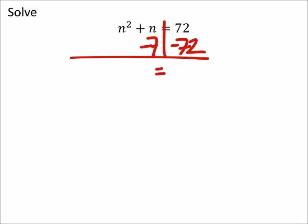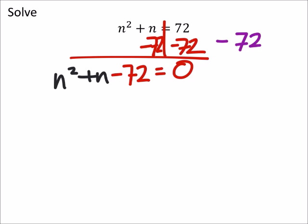So minus 72. There we go. So 72 minus 72 is zero. We did have n squared plus n, which we can't combine with negative 72 or minus 72 by itself. So this is our new expression, which we can then factor. Negative 72, more specifically.